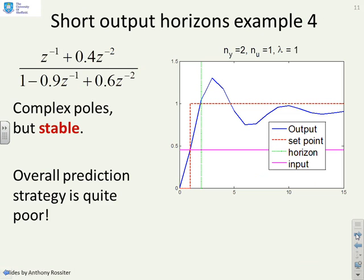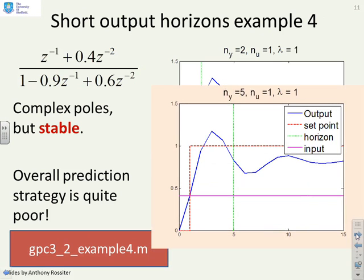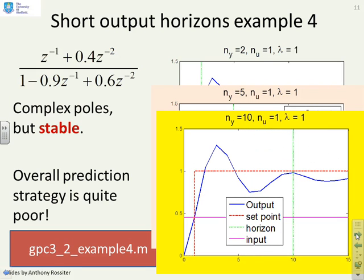Final example then. This one you'll see has got complex poles, so it's quite oscillatory. Again you'll see with a low output horizon, this response is really quite poor. If I increase the output horizon a little bit, it's still fairly poor. And even if I go up to 10, it's still fairly poor.